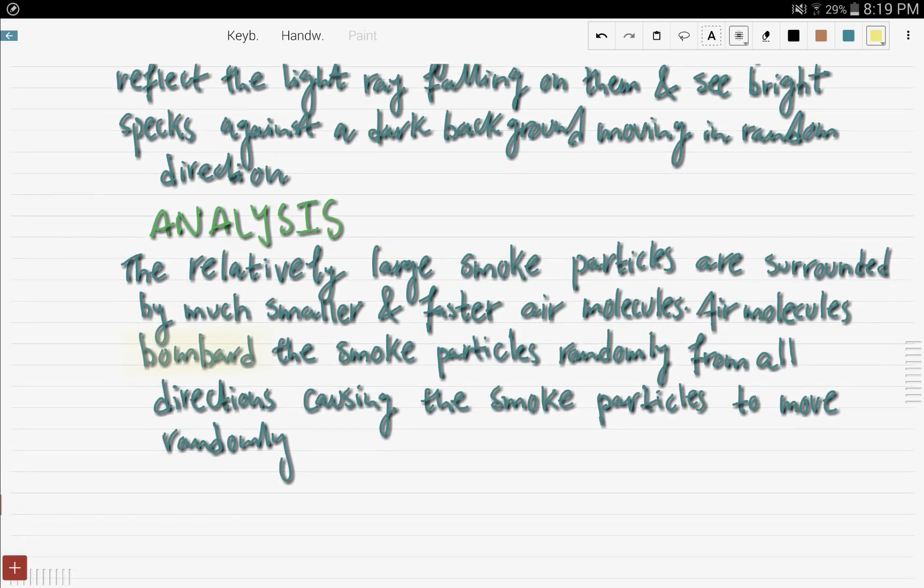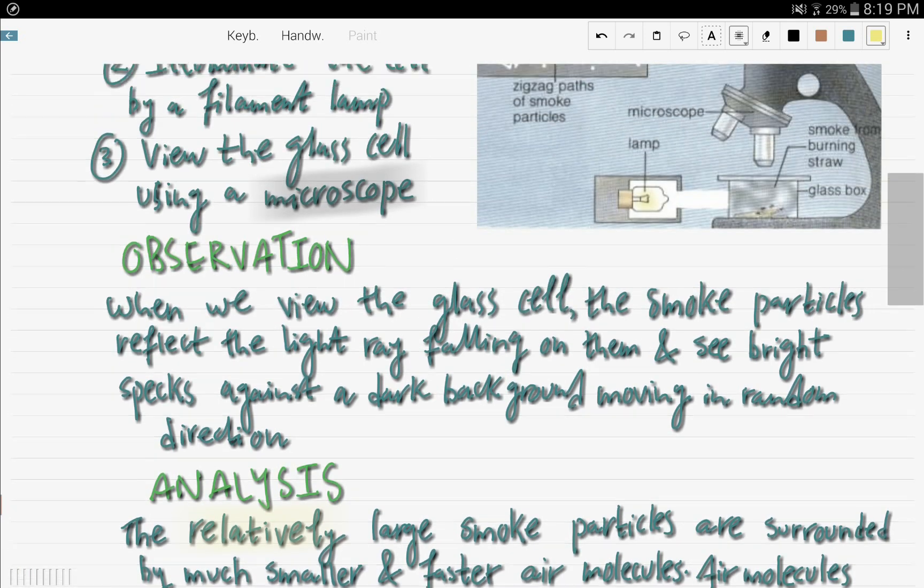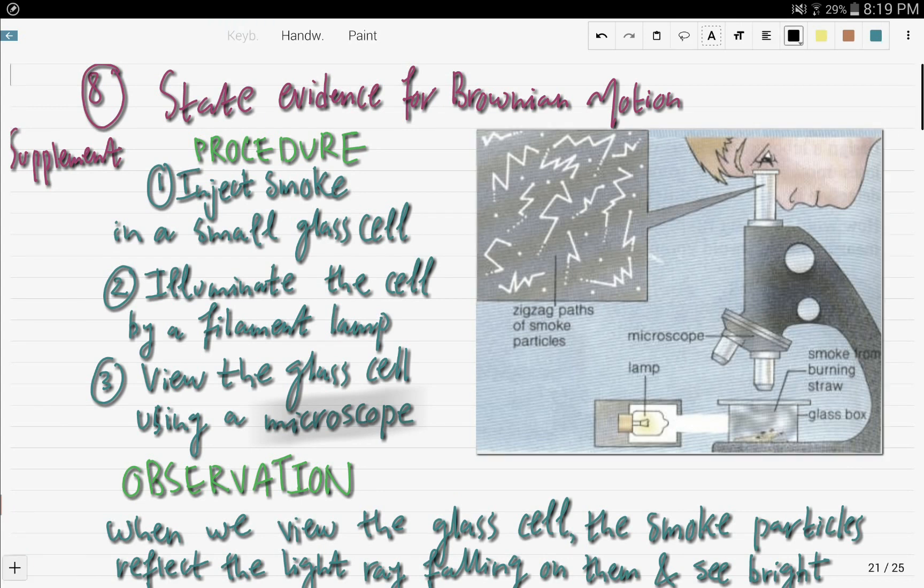The analysis is that the relatively large smoke particles, as you can see here relatively, are surrounded by much smaller and faster air molecules. And these air molecules bombard, as we say bombard is kind of a key word that must come into your mind when you hear Brownian motion. So the air molecules bombard the smoke particles randomly from all directions, causing the smoke particles to move randomly. And so that was a pretty easy experiment to carry out to prove the Brownian motion.